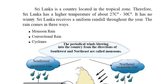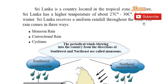Seasonal changes mean each and every area is different from the other. Sri Lanka receives uniform rainfall throughout the year. Uniform means the same throughout. We can categorize rain in Sri Lanka into three parts: the first one is monsoon rain, the second one is conventional rain, and the third one is cyclones.